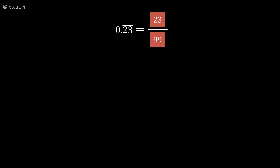What about 0.2371 bar, where the bar is only on 71? It's not a complete 4-digit bar—it's 0.23717171 and so on.